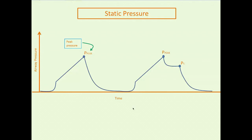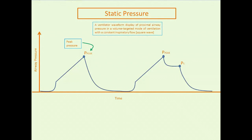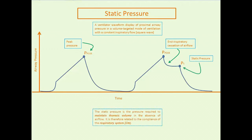A quick recap of what a static or plateau pressure is on the ventilator: with airway pressure on the y-axis and time on the x-axis, you have your peak pressure. You can apply an end-inspiratory hold when the patient is passive with the ventilator, hold pressure at the end of inspiration, and you get the plateau pressure — the static pressure. This removes airflow from the equation, and you are assessing the amount of pressure that must be applied at the proximal trachea just to maintain a volume. The static pressure is therefore related to the compliance of the respiratory system.